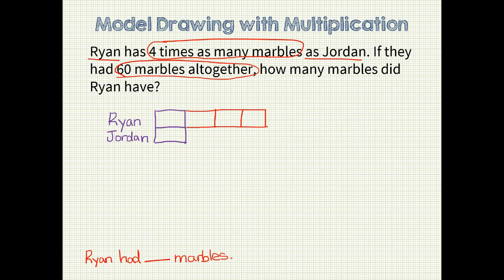A very common mistake that students make with this type of problem is to give Ryan four more unit bars. However, in doing that, Ryan would have five times as many units as Jordan. In order to not make that mistake, count each unit bar as they are put down: the first unit bar is one time as many, the second is two times as many, the third is three times as many, and the fourth is four times as many.